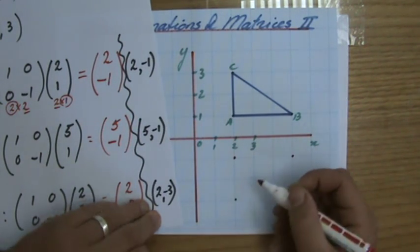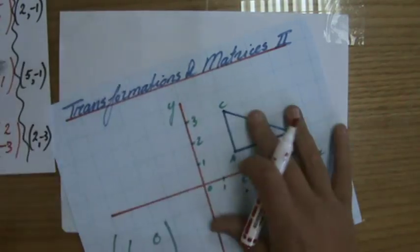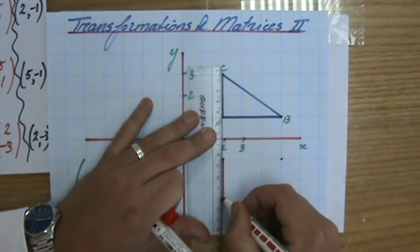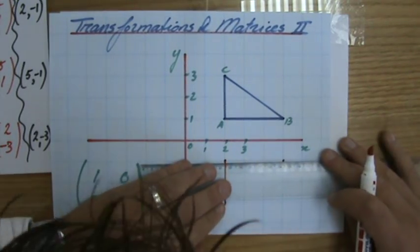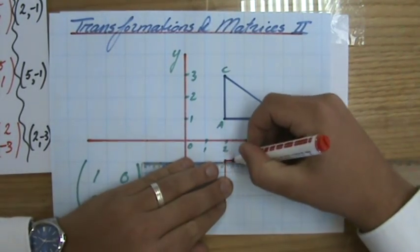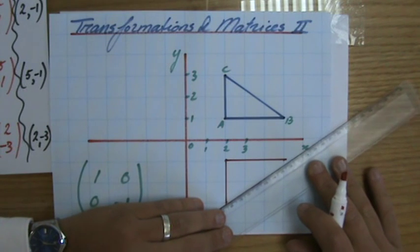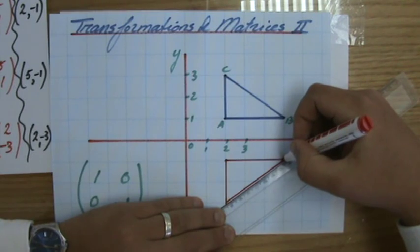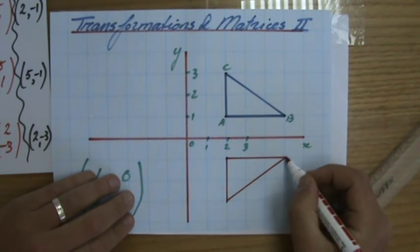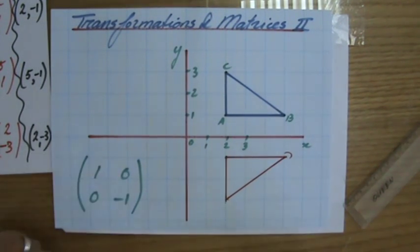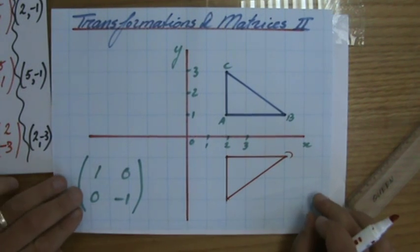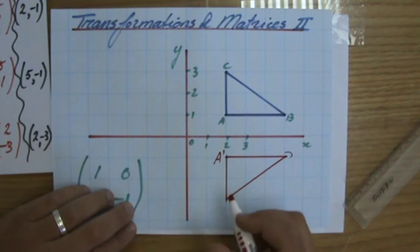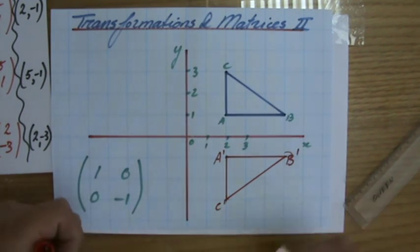2, 1, 2, 3 over there. And then I can draw my image, which is the object after the transformation. It's called the image. And it is always good to label your points. You do a more accurate job than what I'm doing now. Sharp pencil and a ruler. And that doesn't look very nice, does it? So apologies for that. You make sure you rub it out if you would do the same. Again, I said label your points. A apostrophe, C apostrophe, B apostrophe.